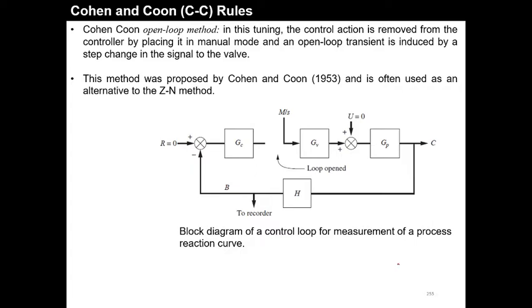We are going to discuss the Cohen-Coon open loop method first. In this tuning, the control action is removed — this is the controller, this is the final control element, and this is the process. First, we have to remove the controller from the control loop, disconnecting it and placing it in manual mode.